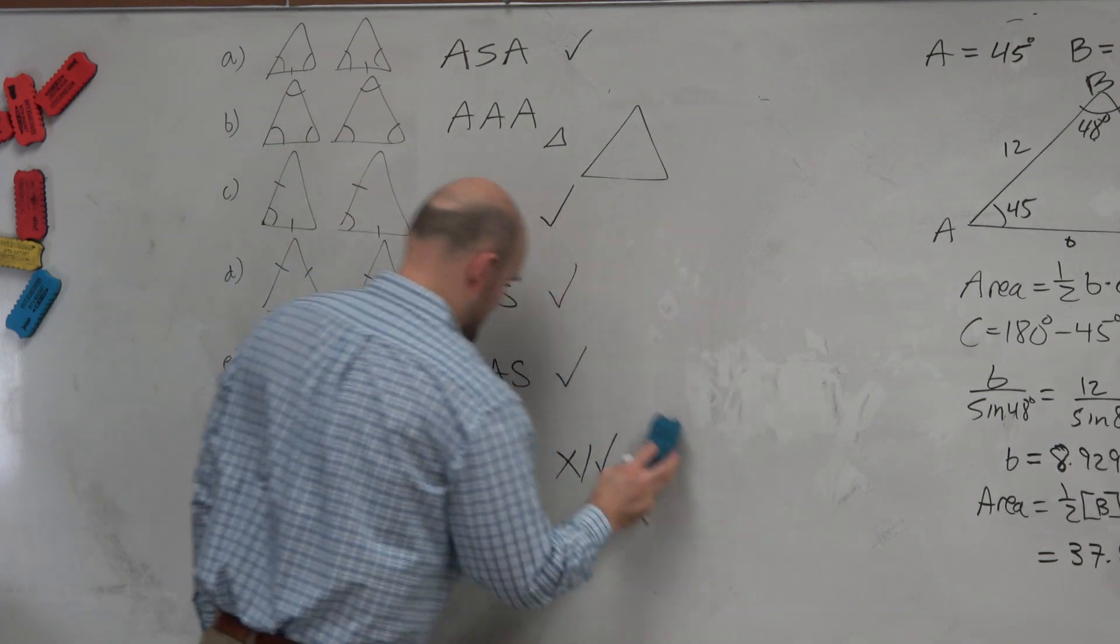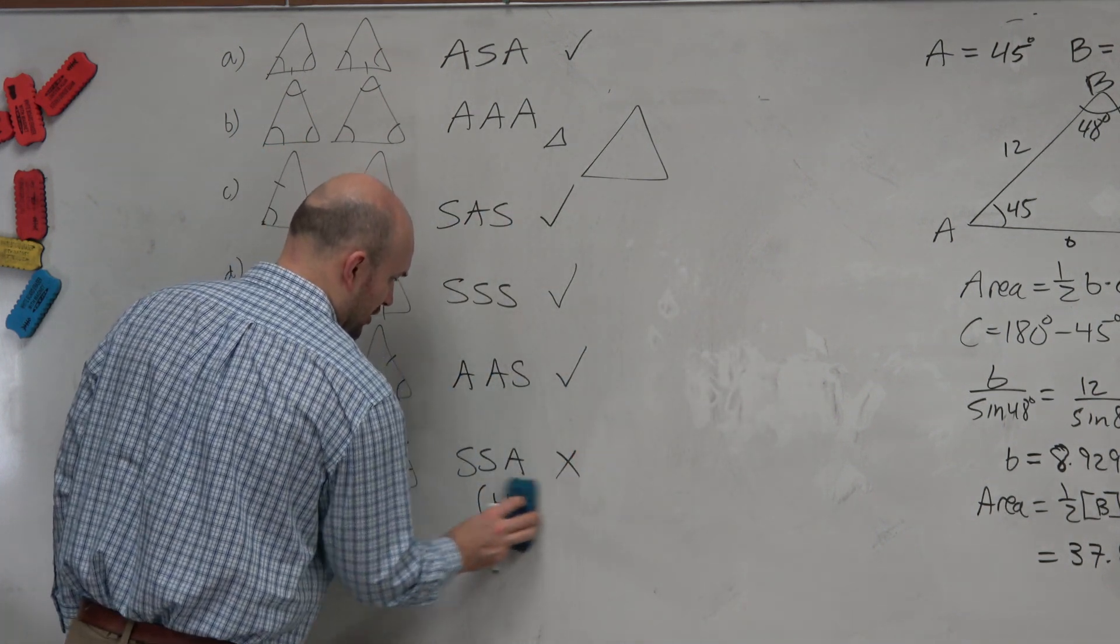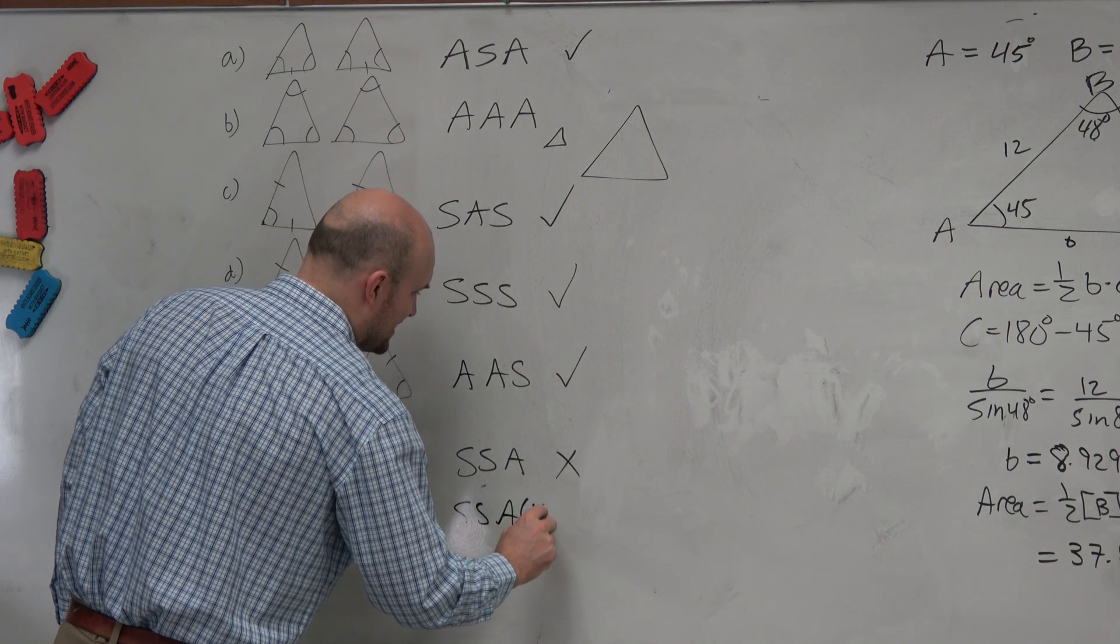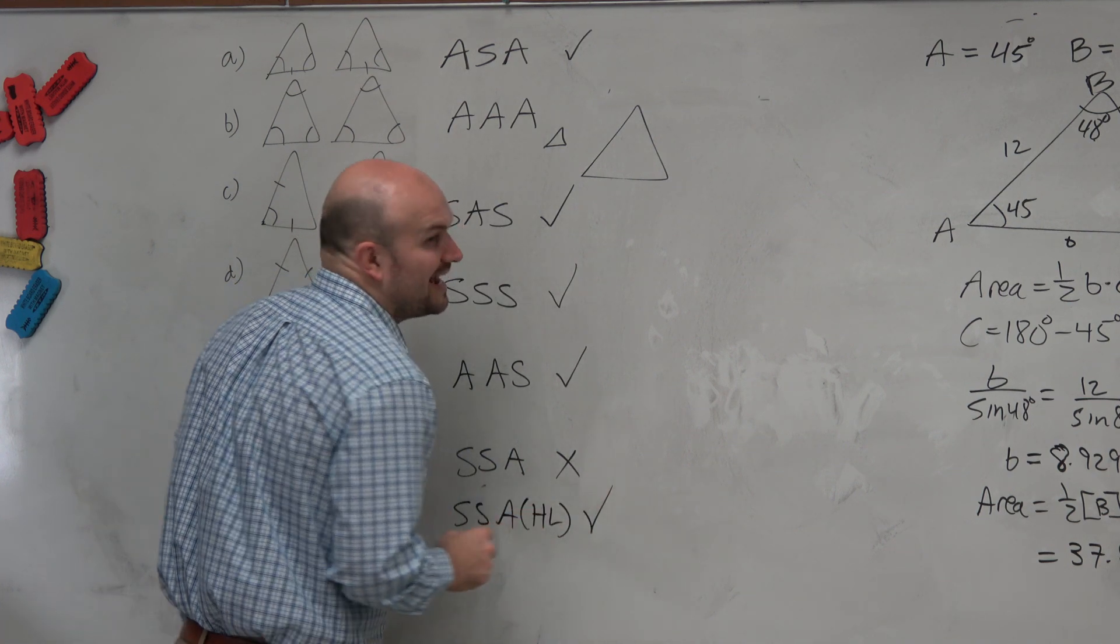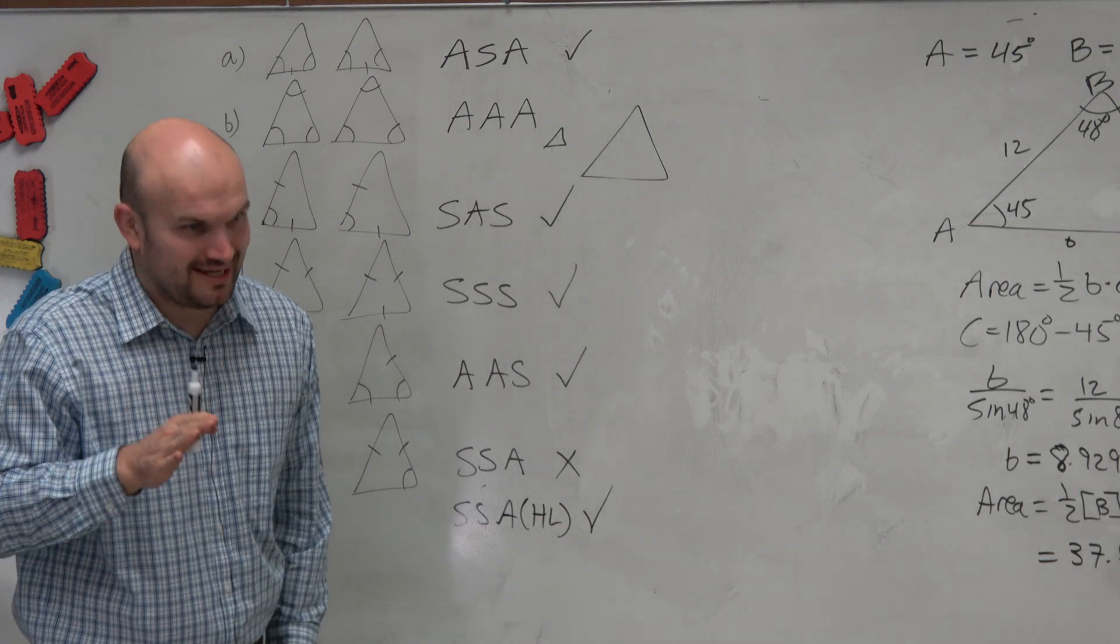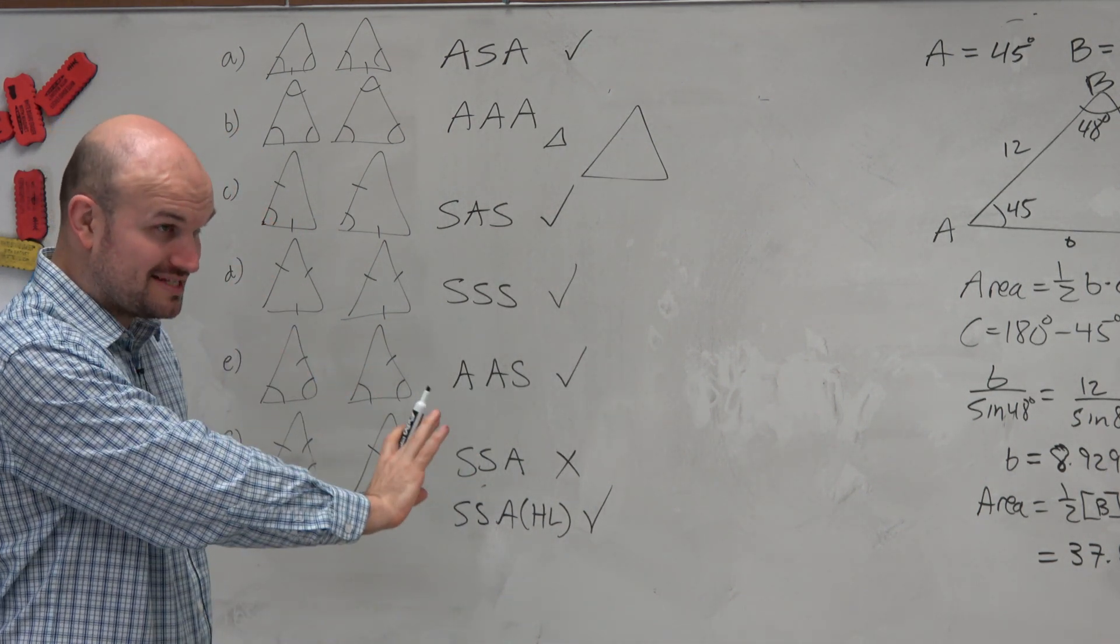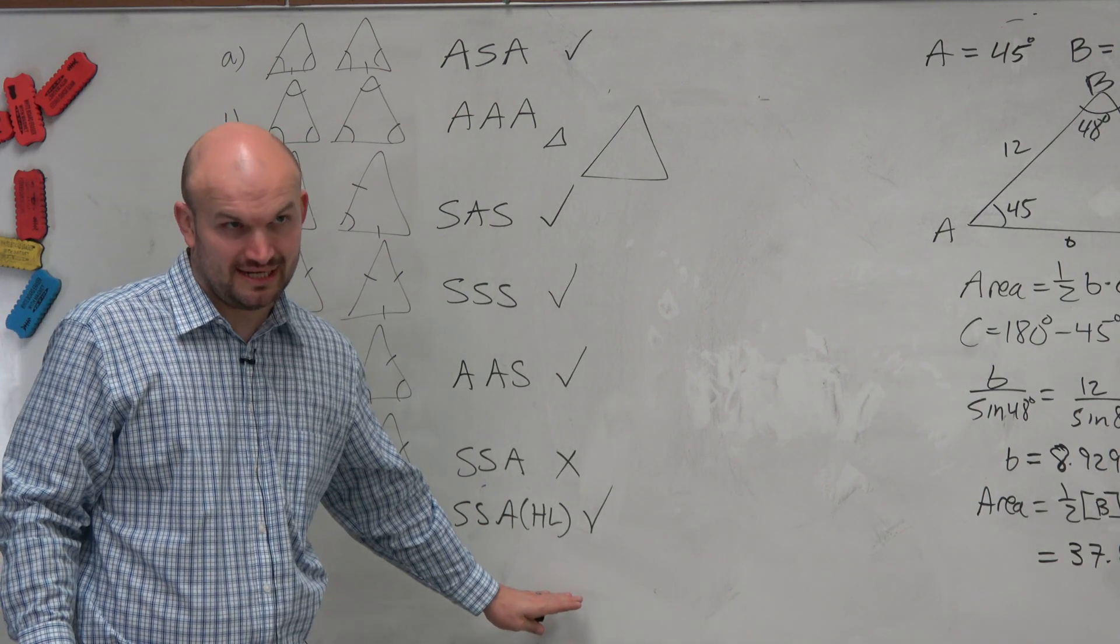So maybe we should do this. Maybe we should say, side, side, angle, no. But side, side, angle, hypotenuse, leg, which is 90 degrees, yes. So it's complicated. OK? Now, we're going to spend the rest of class investigating this complicated issue. All right?